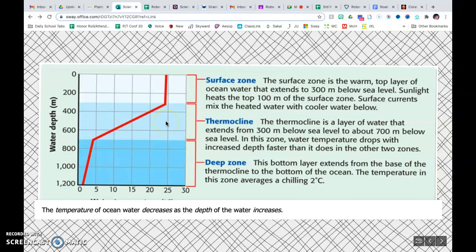At the top, we have what is called the surface zone. It's the warm top layer of ocean water that extends down to about 300 meters below sea level. Sunlight heats the top 100 meters of the surface zone. Surface currents mix the heated water with the cooler water below. So there's a convection current going on, just like we talked about before.